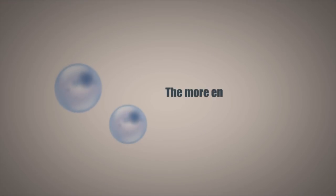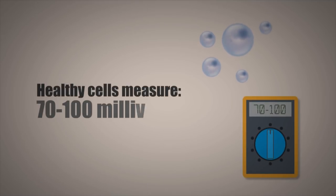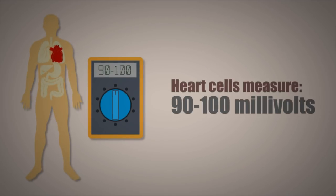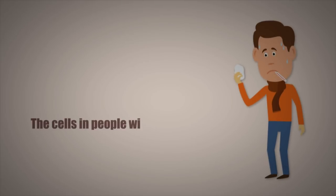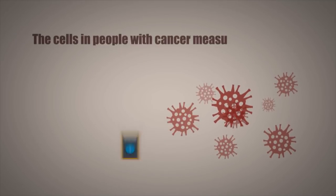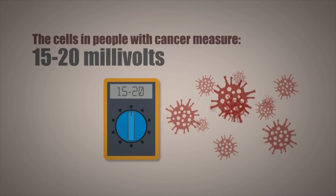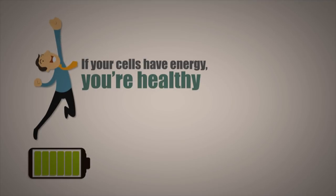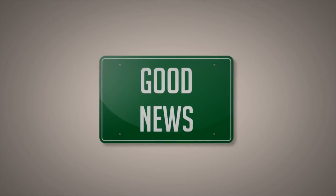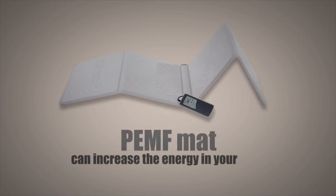The more energy your cells have, the healthier they are. Healthy cells usually measure from 70 to 100 millivolts. Heart cells usually measure from 90 to 100 millivolts. The cells in people with chronic illnesses and chronic fatigue usually measure from 30 to 50 millivolts. The cells in people with cancer usually measure from 15 to 20 millivolts. In other words, if your cells have energy, then you're healthy. And if your cells don't have energy, then you get sick. The good news is that a PEMF mat can increase the energy in your cells.